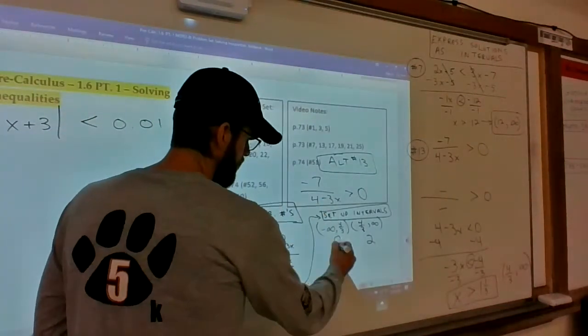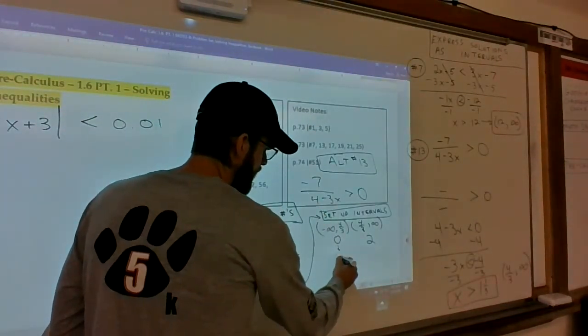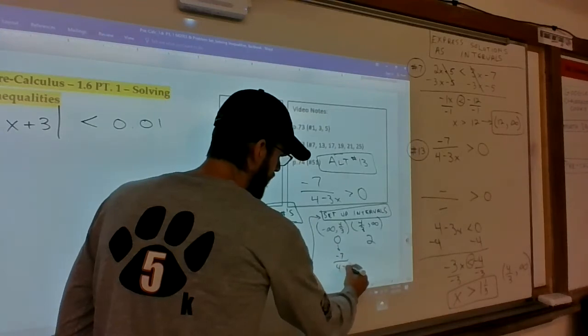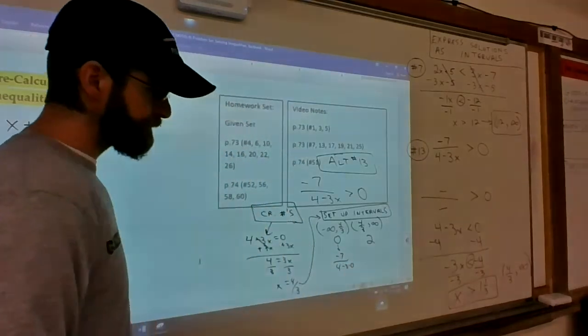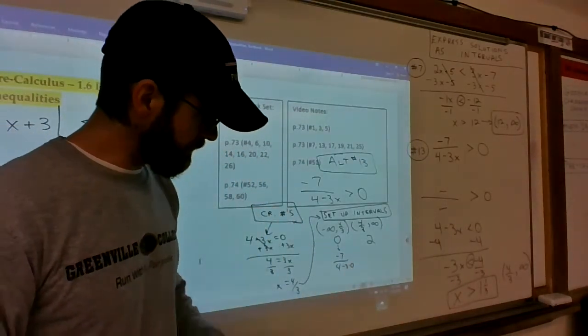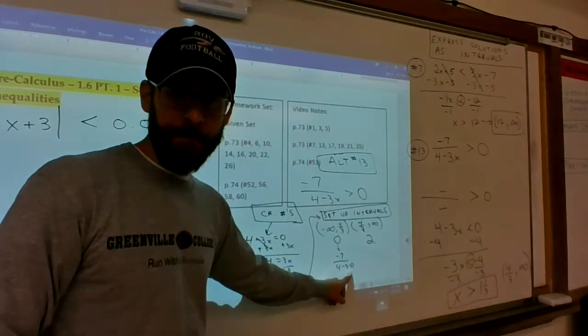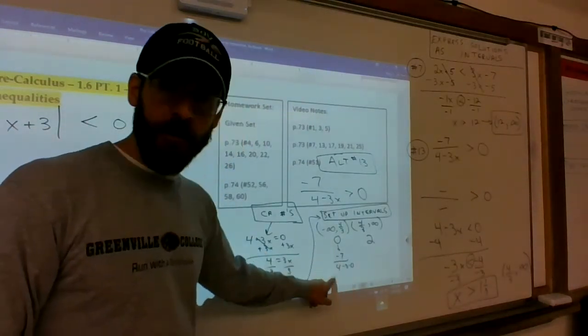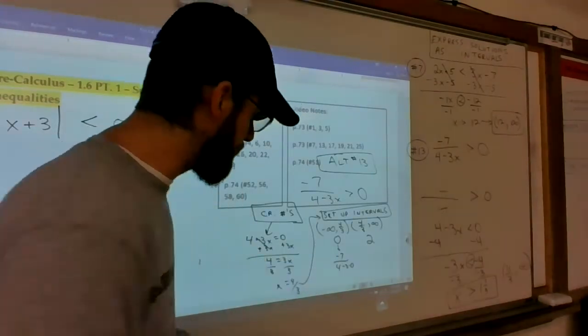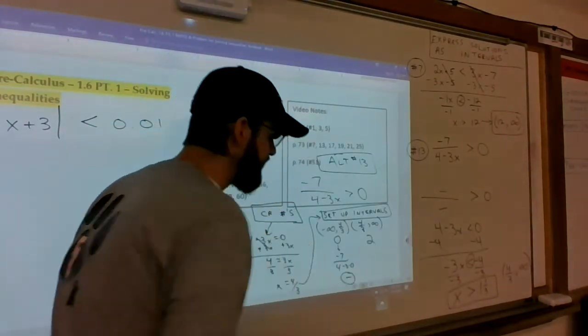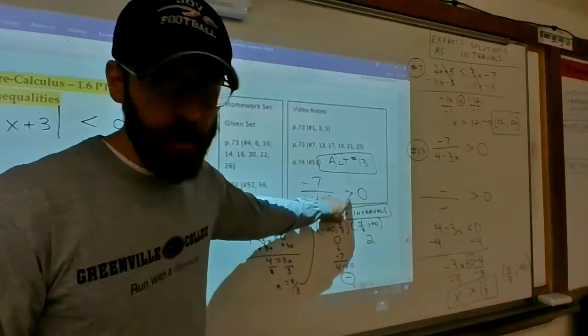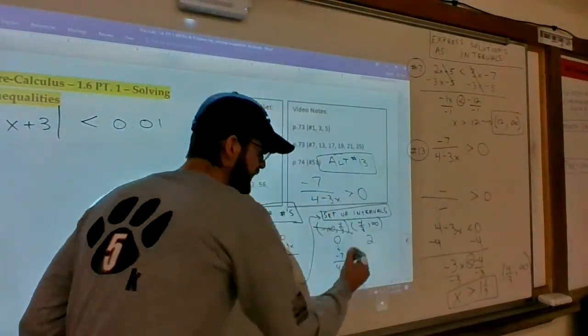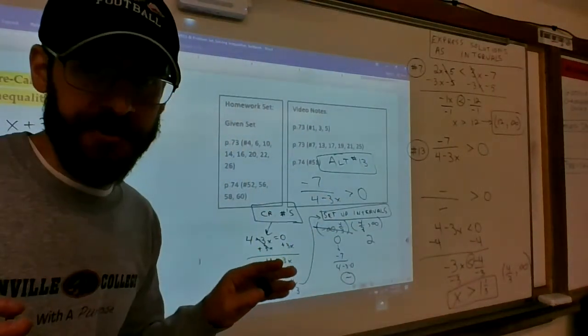Try zero. Negative 7 over 4 minus 3 times zero. 3 times 0 is 0. 4 minus 0 is 4. Negative 7 over 4 is a negative number. Because it's a negative number, it is not greater than zero, so this interval is not a viable option for the solution.